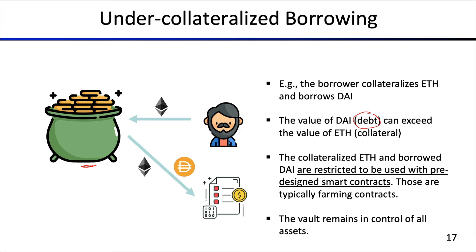These are typically farming contracts. So if you want to generate yields based on your debt, that's something you may want to consider. Otherwise, it's probably not going to help you if you want to do any arbitrary action with your debt. What's really important here is that the vault remains in control of all assets at any point in time during the lifecycle of the debt position.